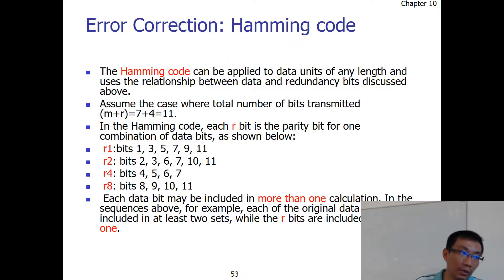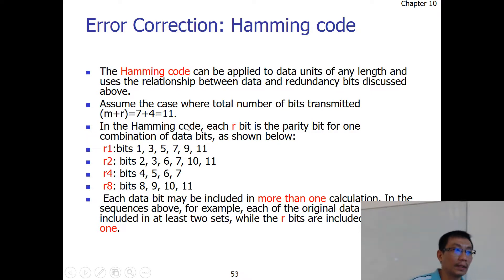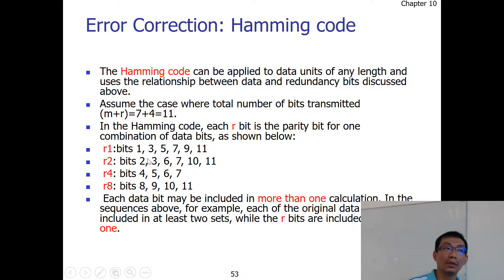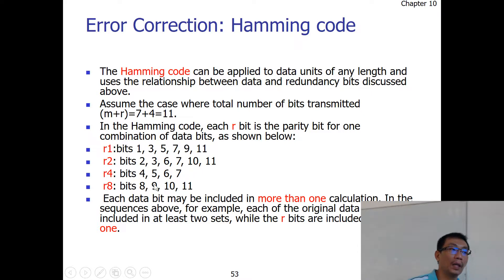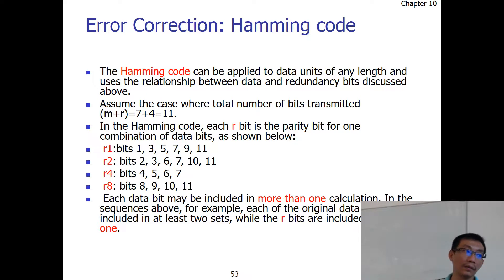A Hamming code is used to detect and correct the error. In the Hamming code, R1 checks all the odd bit positions — bit 1, 3, 5, and so on. R2 starts from bit 2, checks 2 bits, skips 2 bits, checks 2 bits, skips 2 bits. R4 starts from bit 4, checks 4 bits, skips 4 bits. R8 checks from bit 8, then checks 8 bits, skips 8 bits. Then you have R16, R32, and so on.